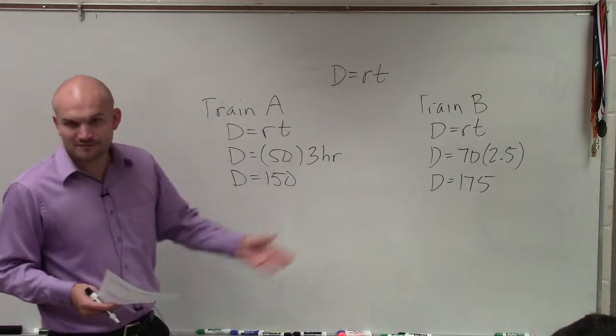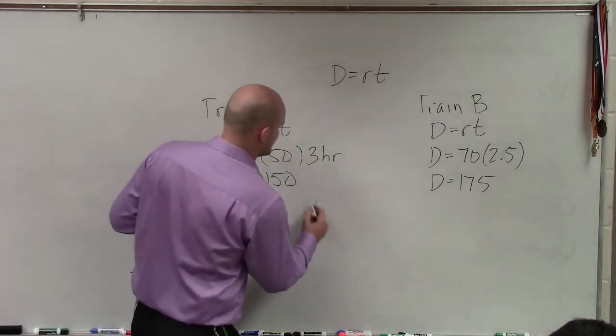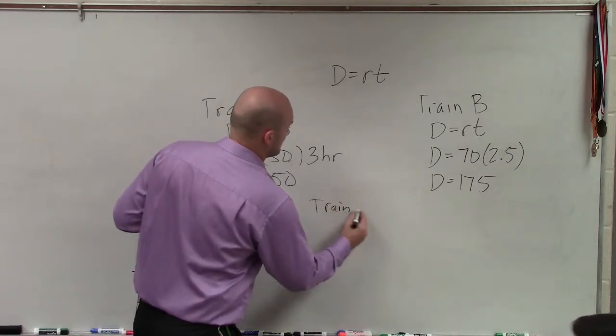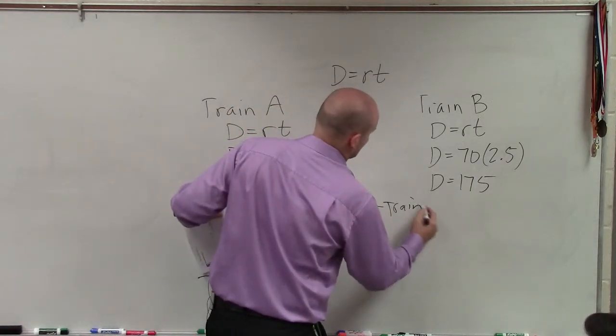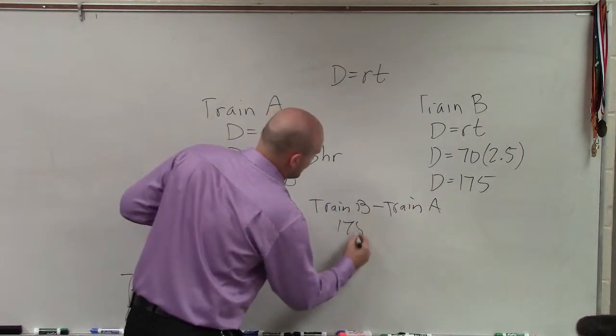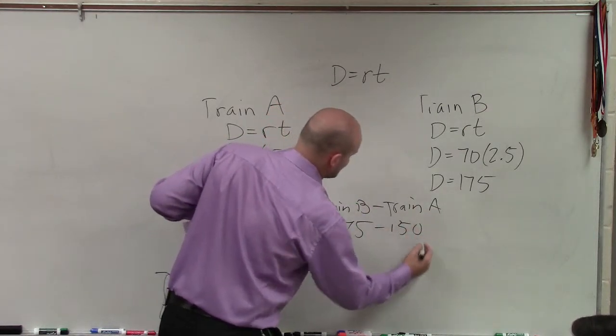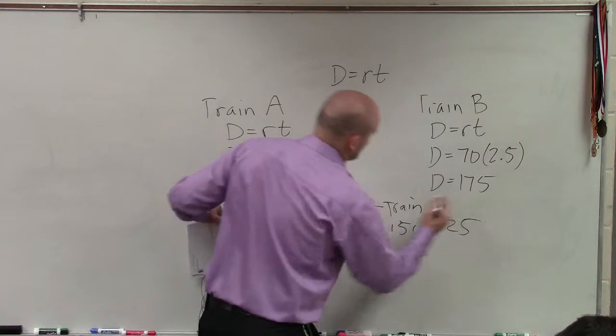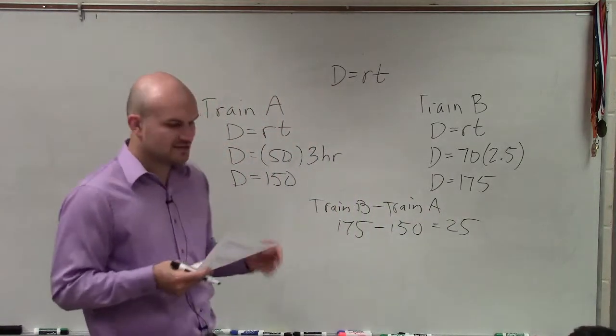So basically, we just want to find the difference between these numbers. So I simply can just say train B minus train A. 175 minus 150 equals 25 miles. So your answer in this case would be G.